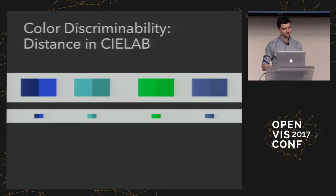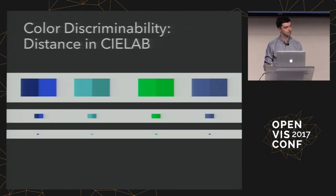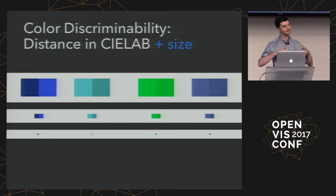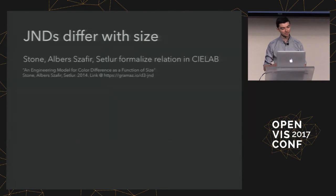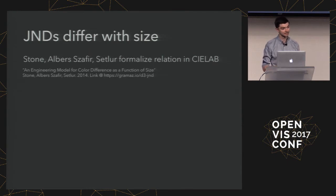Distance is really important, but there's also this element of size — distance is necessary but not sufficient. Maureen Stone, Daniel Abersefier, and Vidya Settler at Tableau formalized this relationship in CIE lab and published a paper about it, which I have a link to at the D3 JND module website. They were looking at visualizations and application areas — bar charts have much bigger color-encoded areas than hollowed-out scatter plots.